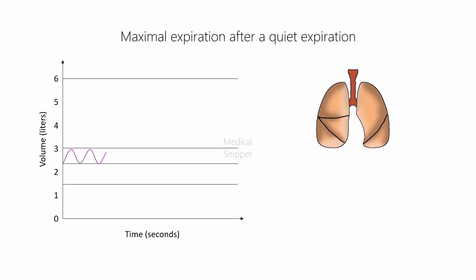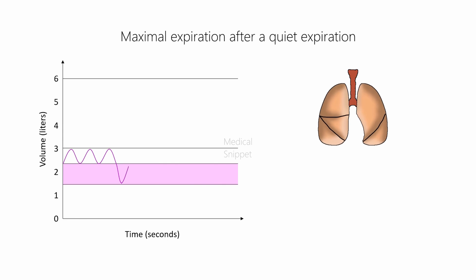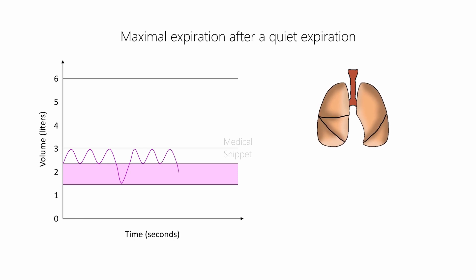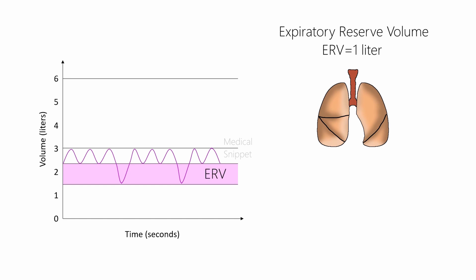The maximum volume of air that can be expired after a quiet expiration is called expiratory reserve volume, which is about 1 liter.